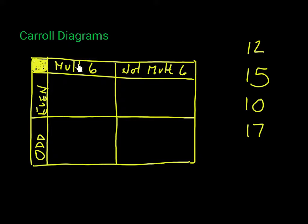In this particular Carroll diagram, all the numbers in this column have to be multiples of six, and all the numbers in this column have to be not multiples of six. It's very important to read the question and the information provided to you carefully. In this row, everything has to be an even number, and in this row, everything has to be an odd number.